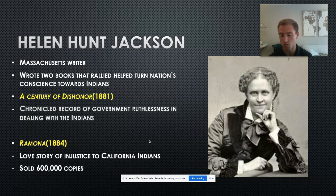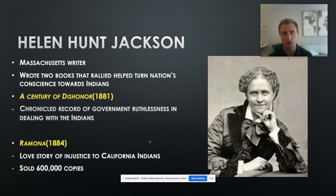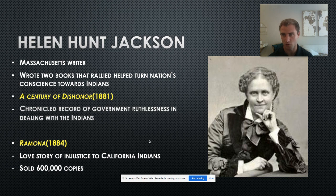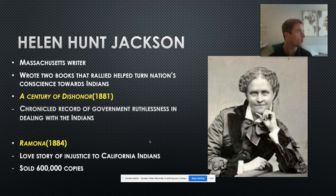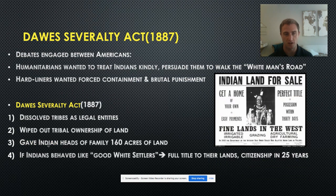Helen Hunt Jackson was a children's writer from Massachusetts who made a large contribution to Native American rights. She wrote two books — especially A Century of Dishonor — that brought to light the contradictory and hypocritical treatment the U.S. government had toward Native Americans. A Century of Dishonor outlines the entire history of the federal government's treatment of Native Americans, their broken promises, and all the times atrocities were committed. Ramona was a fictional story with a similar purpose, discussing injustice to Indians in California.